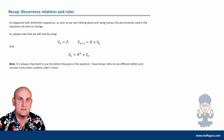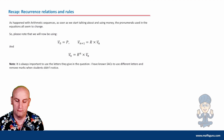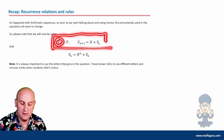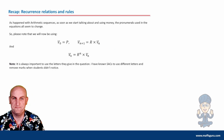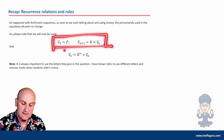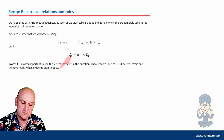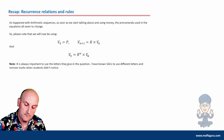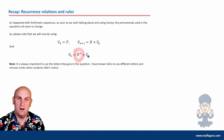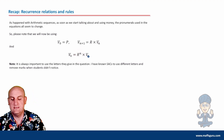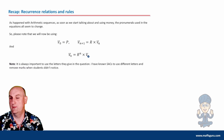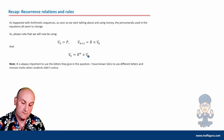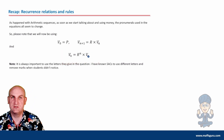Let's recap our recurrence relation and recurrence rule. A relation starts with V₀ and has V(N+1) and V(N) in it. Because it's geometric, we have an R value — we don't have a plus or minus D. We can turn this recurrence relation into a recurrence rule, which always starts with V(N), and in this situation R is to the power of N. It's always important to use the letters given in the question — using the wrong letters in exams will lose you marks.